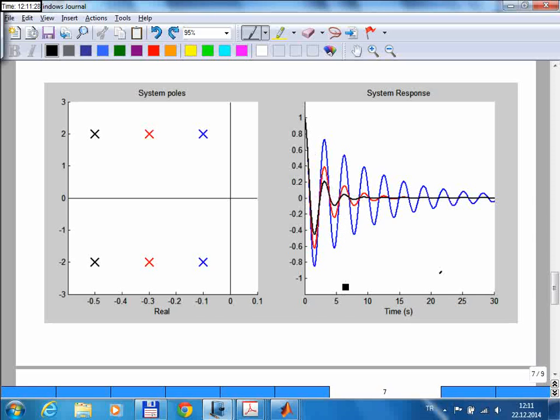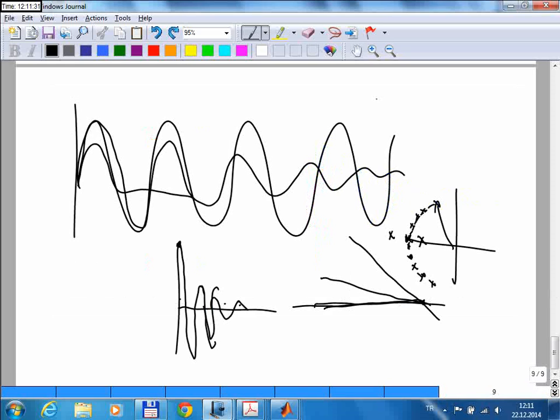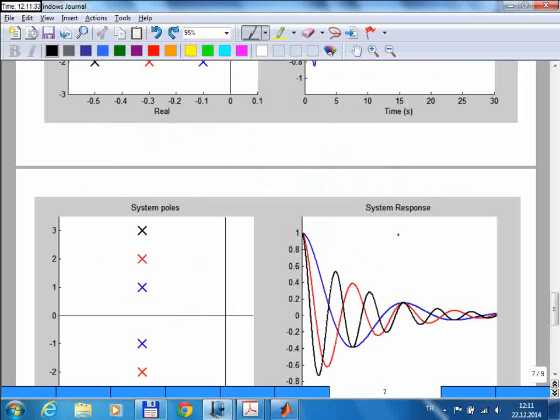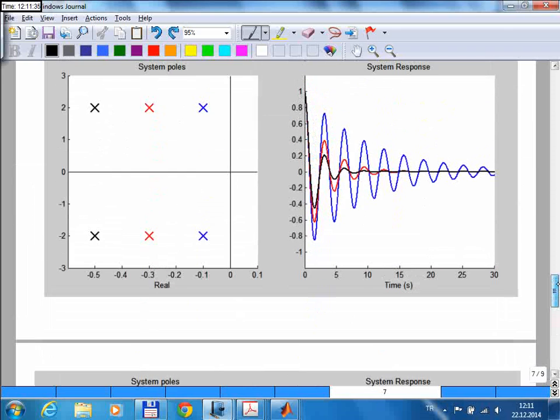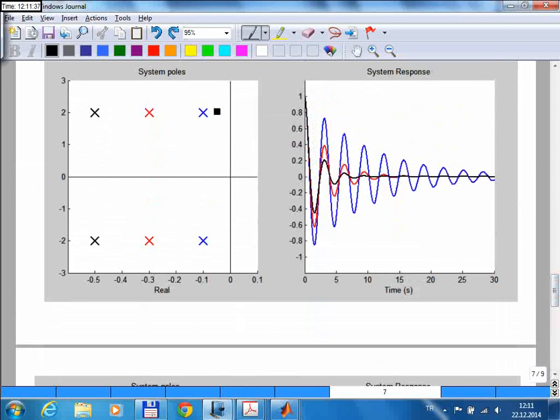And again, if you use the Cartesian coordinates, the vertical component, which is the imaginary part, gives us the frequency value. They all have the same imaginary part, which is 2.